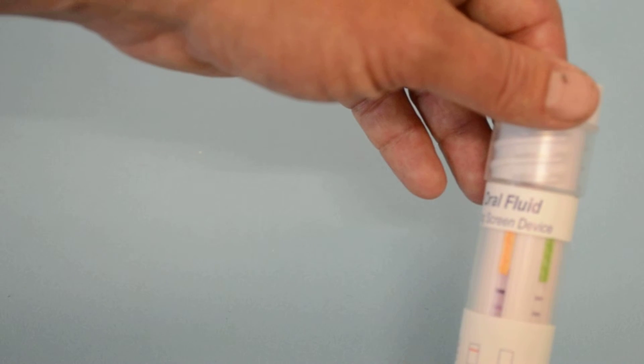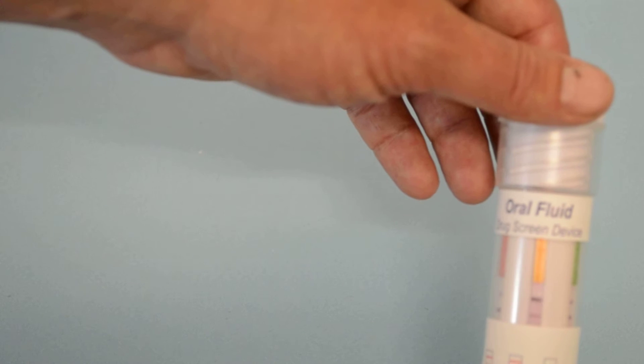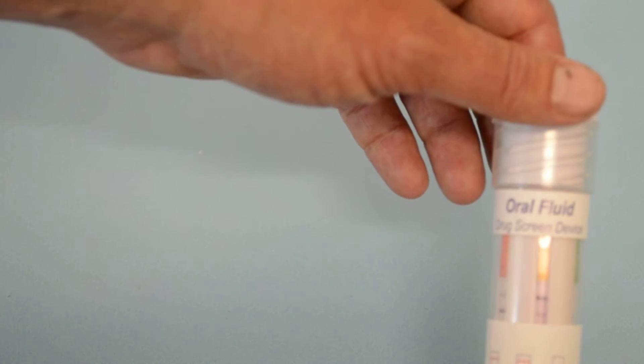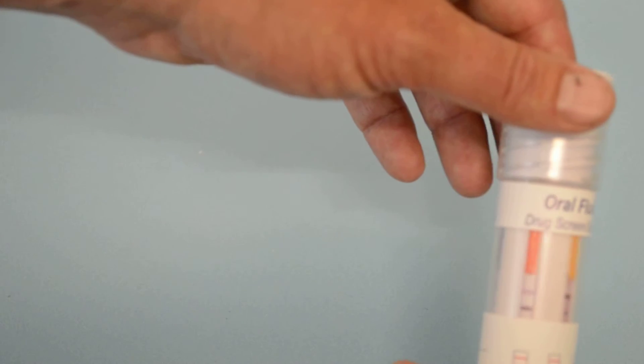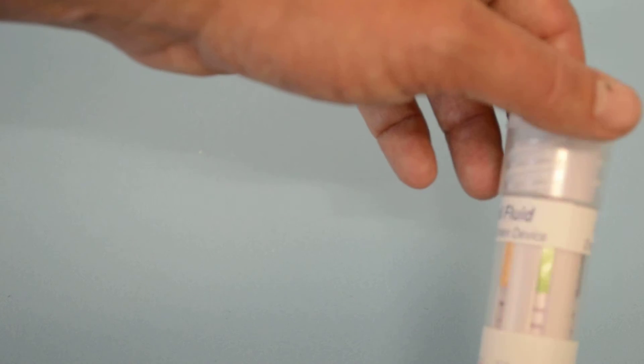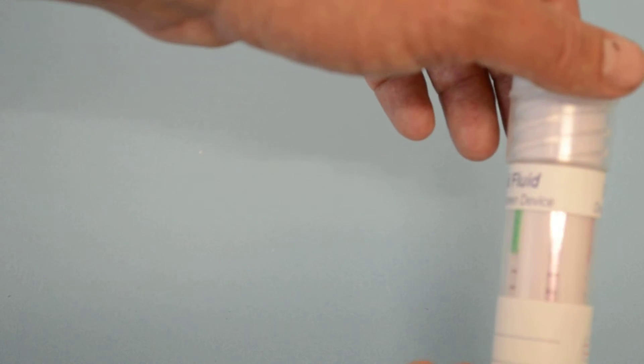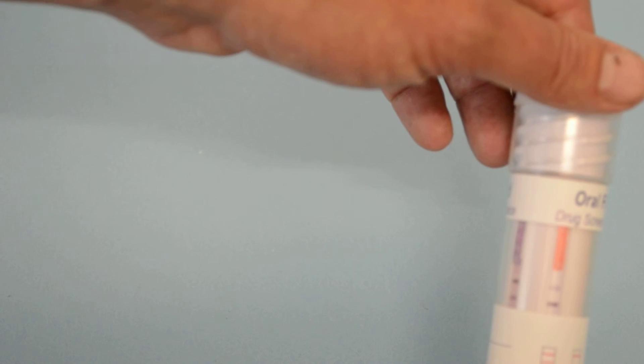An invalid test result as demonstrated on this sample here would be an absence of a control line. If there is no control line, even if there are test lines showing, you must not interpret that result. It's an invalid result and you must repeat the test with a further sample.